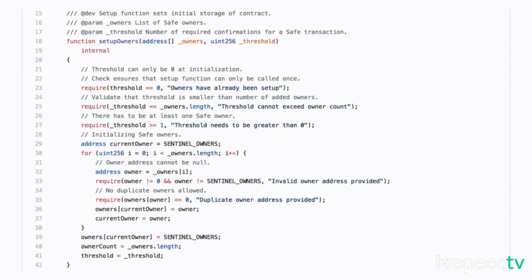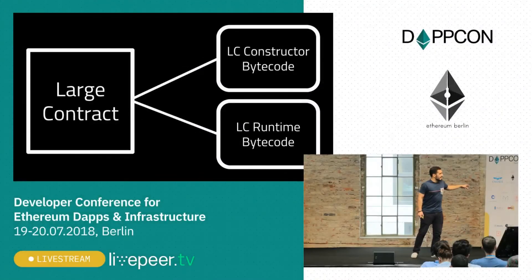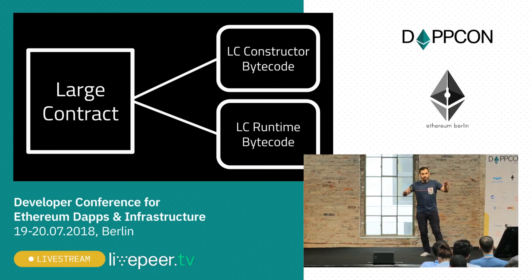Relaying those checks to the application layer instead of just relying on the way the EVM is supposed to work is maybe not the best option. So what we can do is take that large contract — what could be Gnosis Safe — get the constructor bytecode out, and get the runtime bytecode out, making both of these deployable.